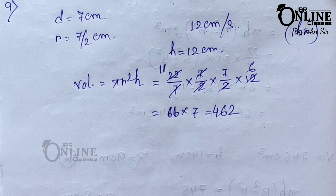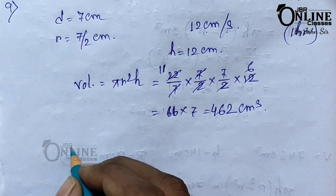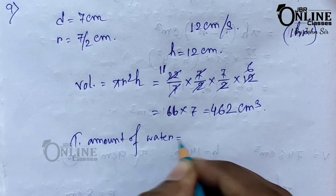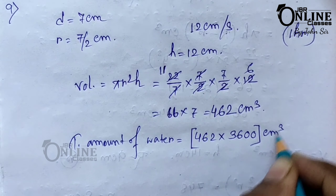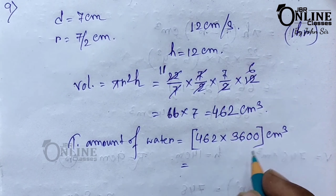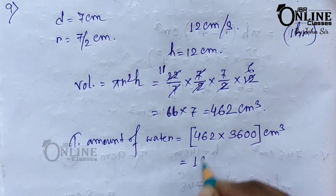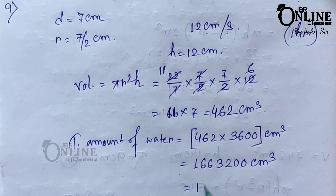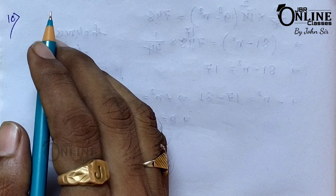To find the total amount of water pumped out in one hour: one hour equals 3600 seconds, so total volume equals 462 × 3600 equals 1,663,200 centimeter cube. Converting to liters, the answer is 1663.2 liters.